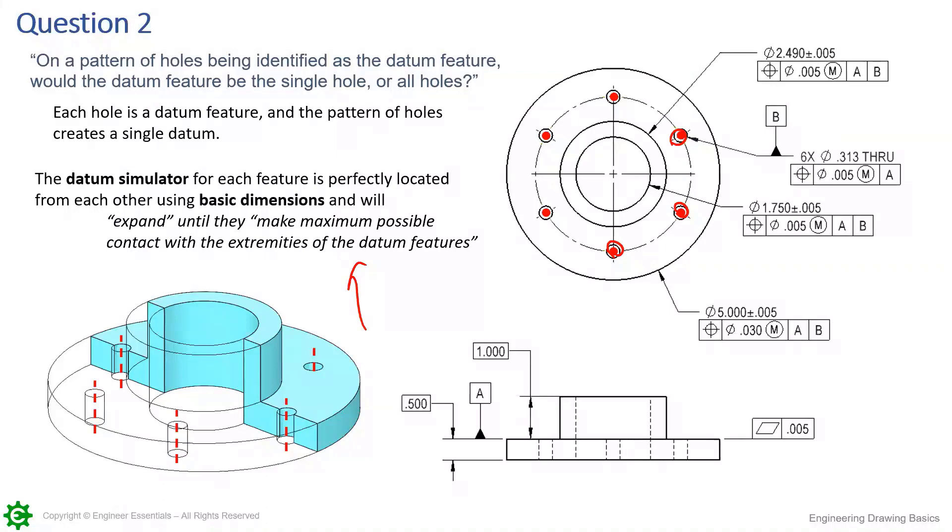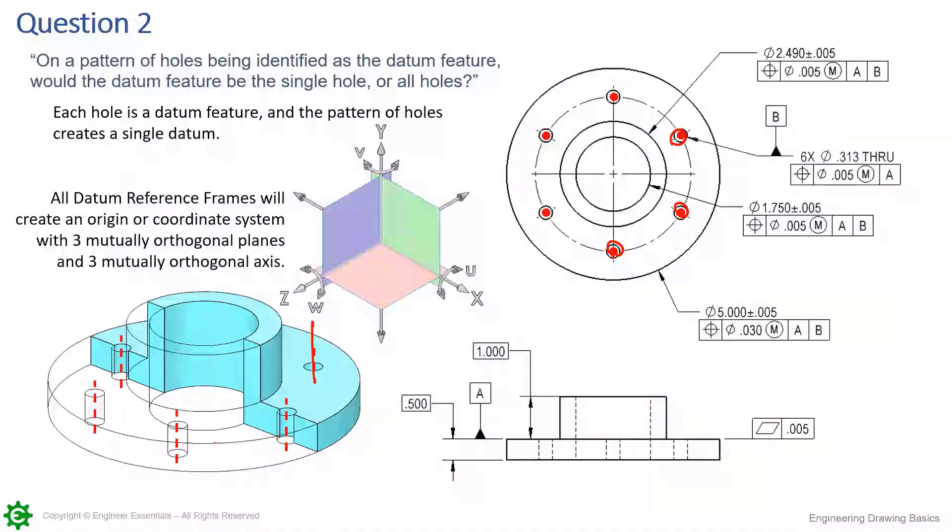Whether it's RMB, LMB, or MMB, we're using datum simulators expanding or fixed, but they will be centered at basic or at true position. By doing that, we are locking in location and orientation. It's not just a single axis of one of these holes. What we're doing is creating this datum reference frame, and every datum reference frame has three orthogonal planes regardless of how your features come in.